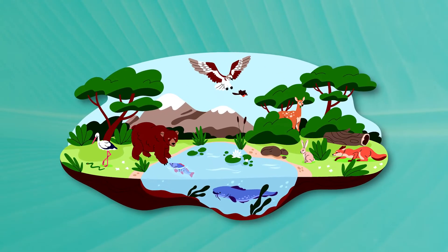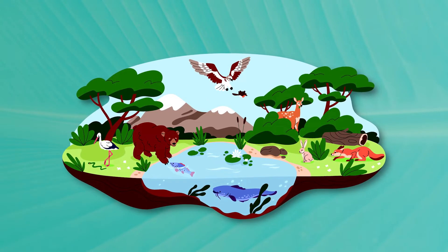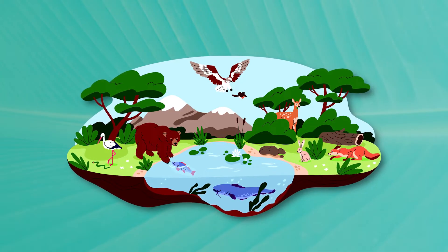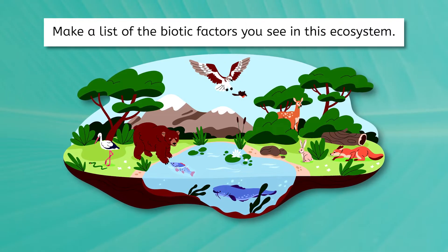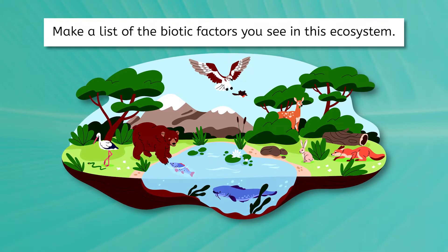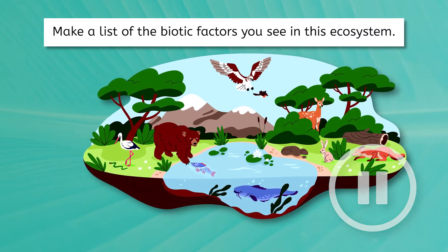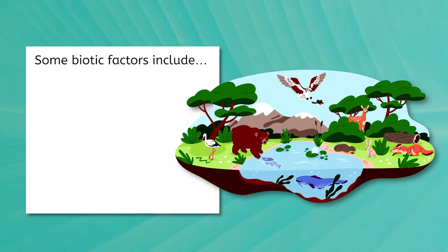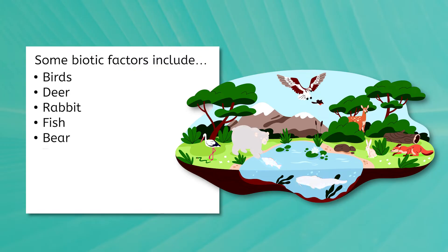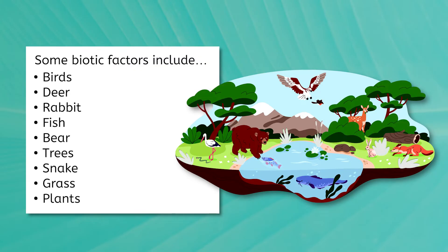Take a look at this ecosystem. Every ecosystem is composed of both biotic and abiotic factors that work together to make the ecosystem successful. Let's start with the biotic factors. I want you to pause this video and make a list of as many biotic factors in this image that you can. Welcome back! Let's review your list. Some of the things on your list should include the birds, deer, rabbit, fish, bear, trees, snake, grass, and plants — both in the water and on land.